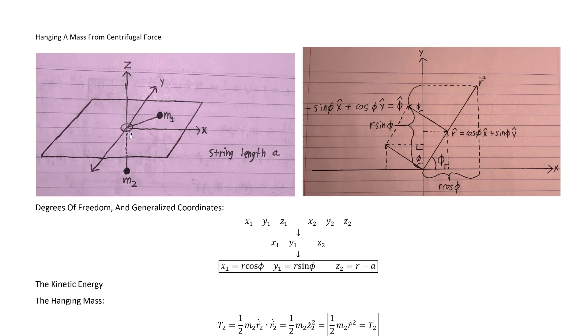So it could go in circles, it could go in spirals, it could just fall straight in, it could move outwards pulling this mass up with it. But the string length, which we're going to call A, is fixed.